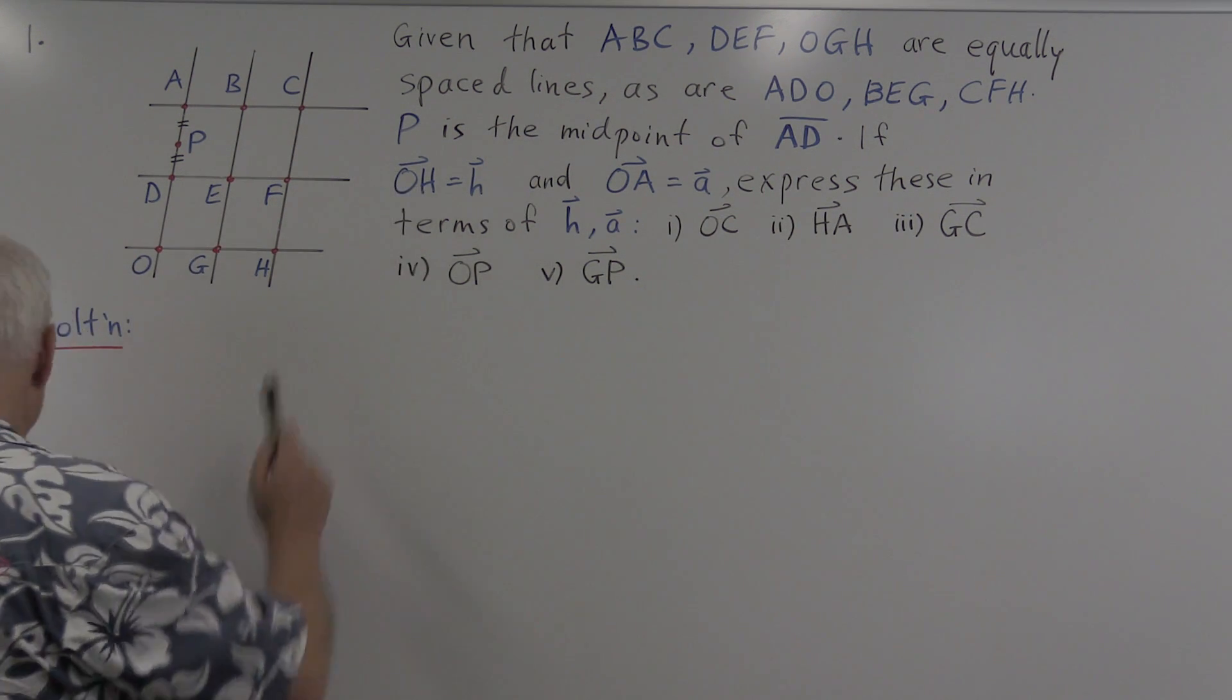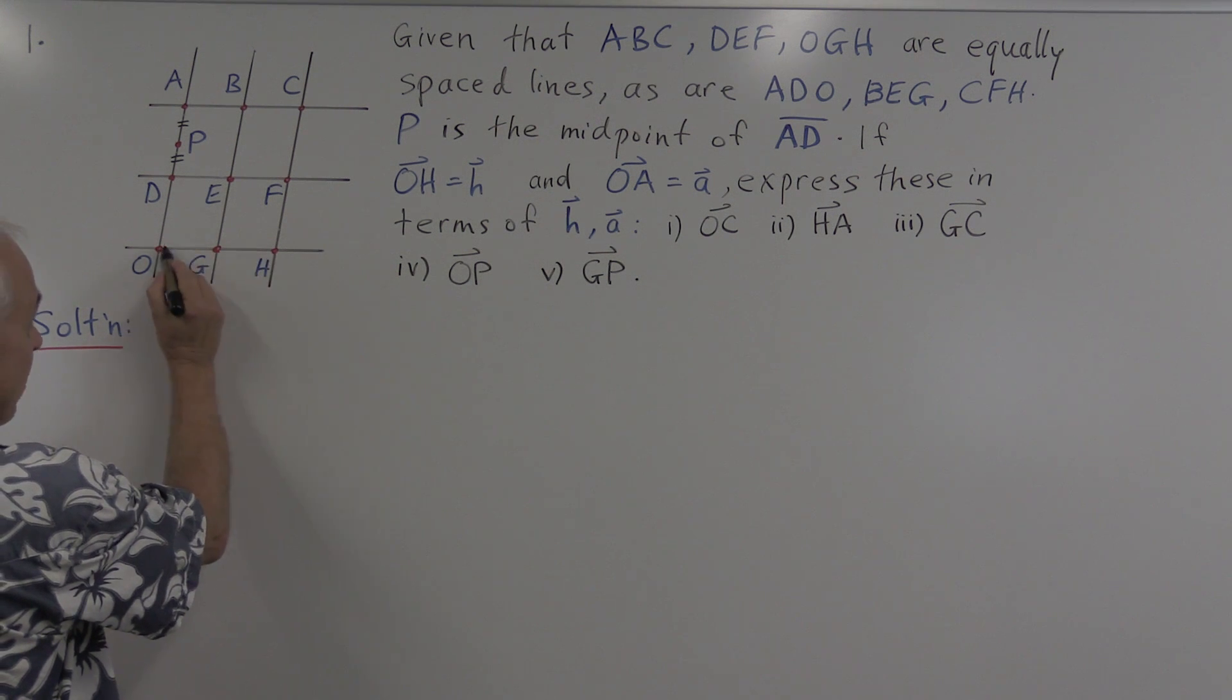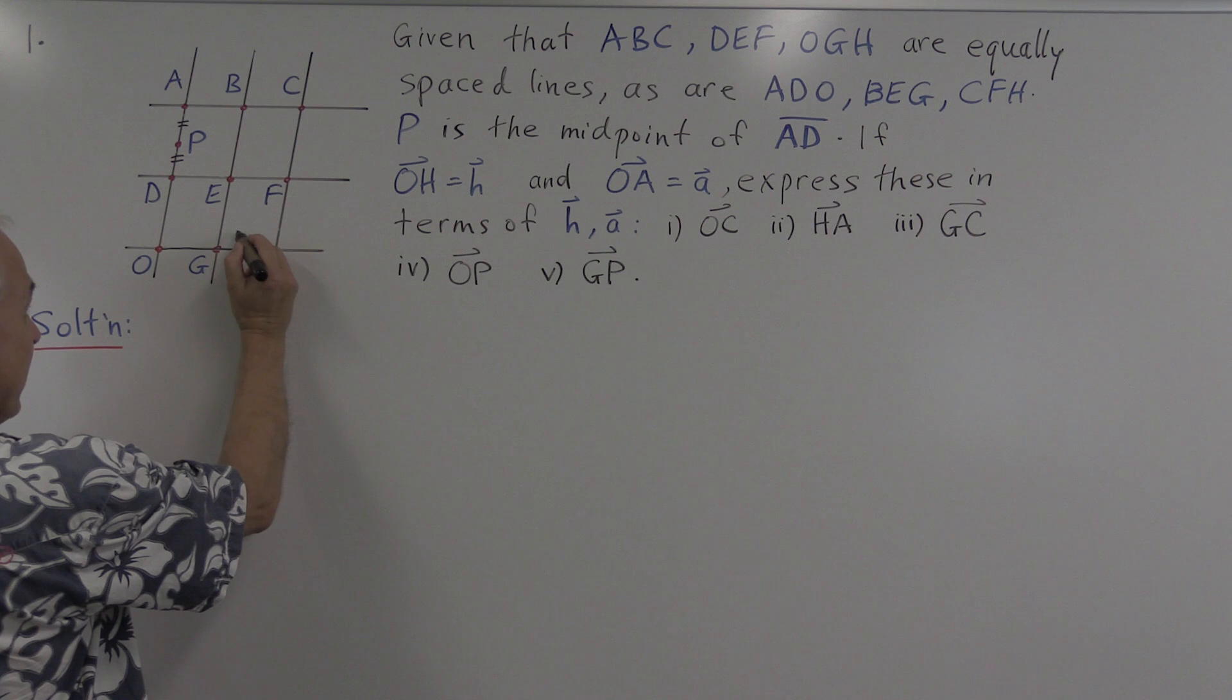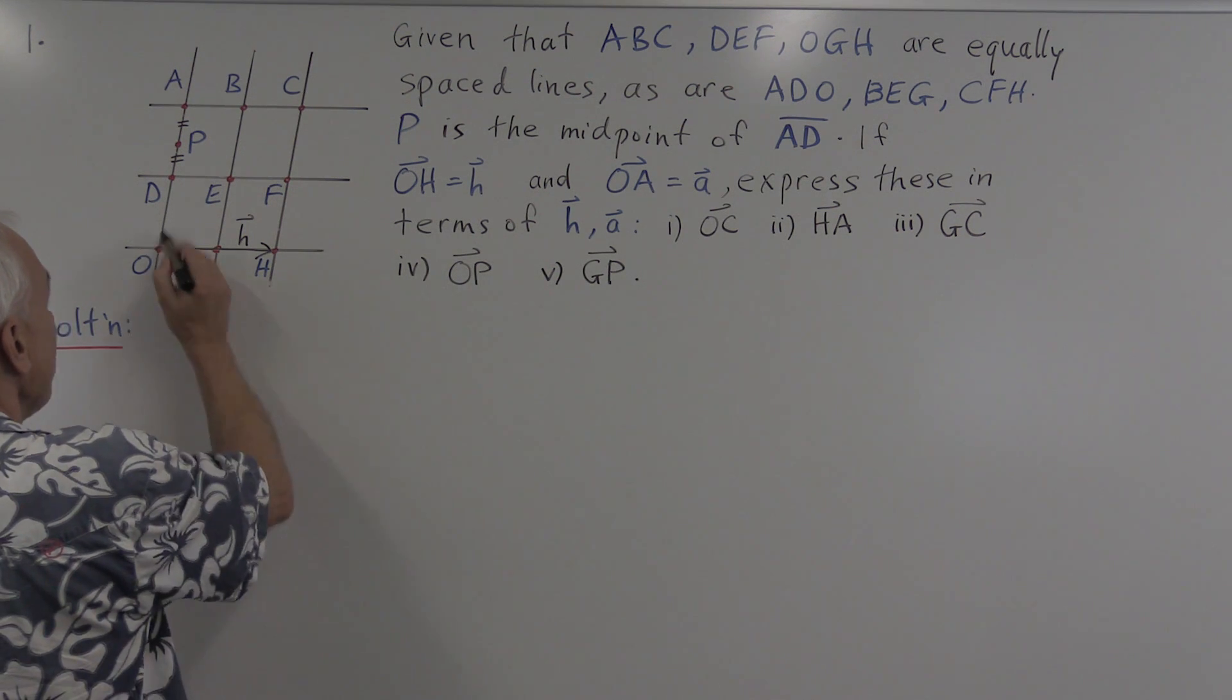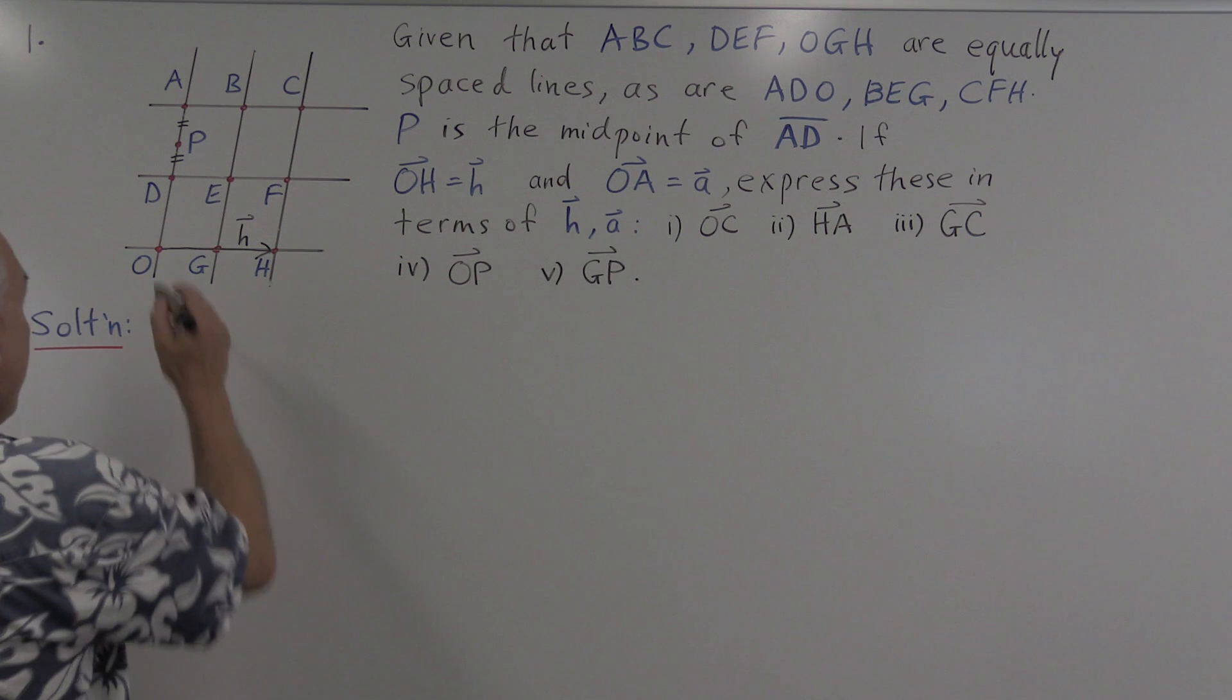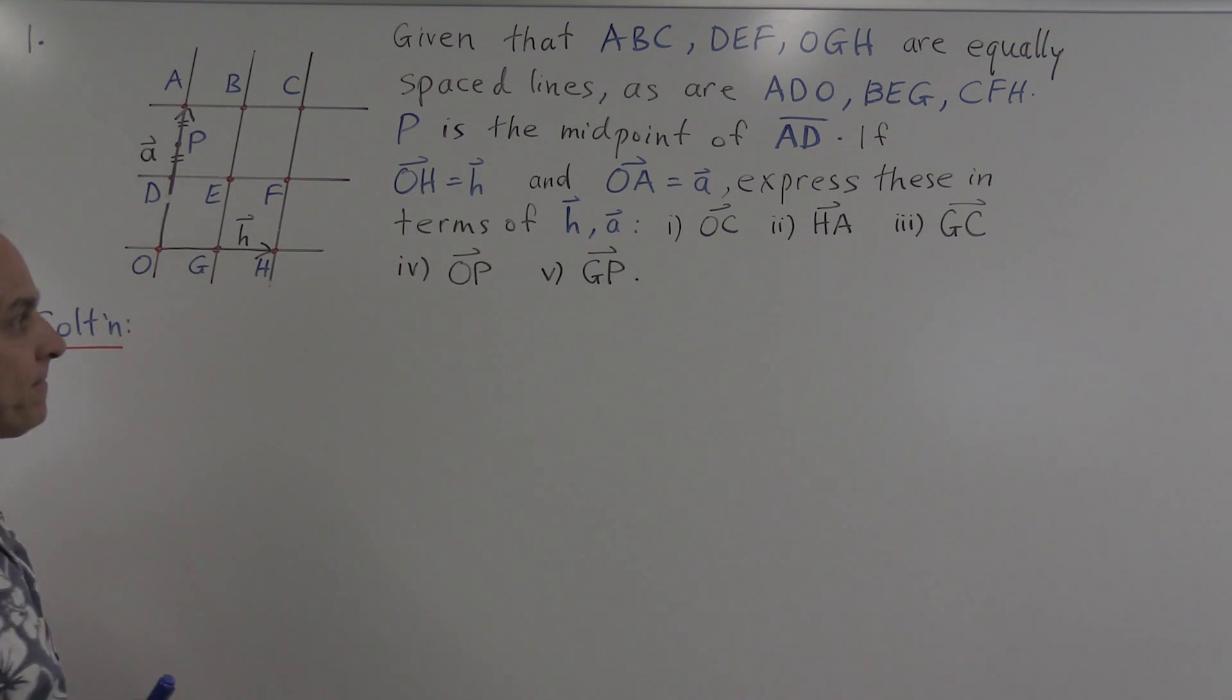In addition, we are given some vectors. We're told that the vector OH is called little h. Let me draw that. So the vector from O to H, there it is right there, that's the vector h. And the vector from O to A, from here to here, is called little a. So this vector here, all the way up there, that's the vector little a. So we have vector h here and vector a here. And we're asked to express, in terms of h and a, these other vectors: the vector OC, the vector HA, the vector GC, the vector OP, and the vector GP.